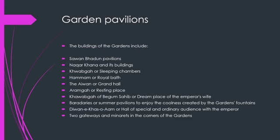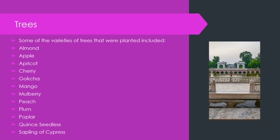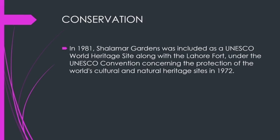Now we will talk about the trees in Shalimar Garden. Some of the varieties of trees that were planted included almond, apple, apricot, cherry, gopcha, mango, mulberry, peach, plum, poplar, queen seedless, and saplings of cypress.